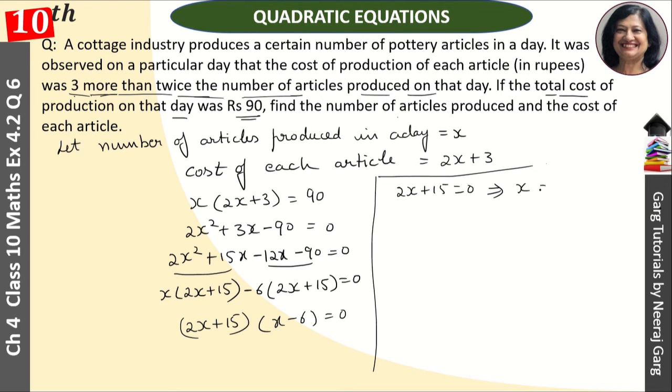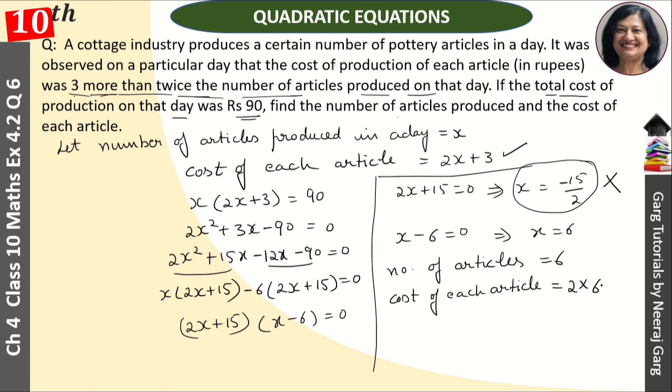And x is equal to minus 15 upon 2 which we will reject because the number of articles is negative. And x minus 6 is equal to 0, then x is equal to 6. This means number of articles is 6 and cost of each article is equal to 2x plus 3, so 2 into 6 plus 3 and this is Rs. 15.